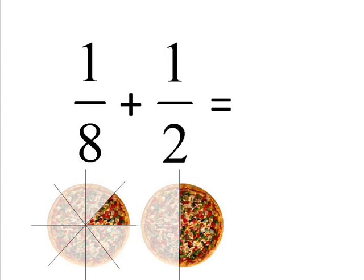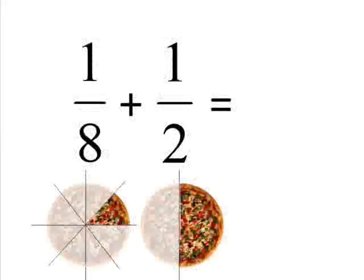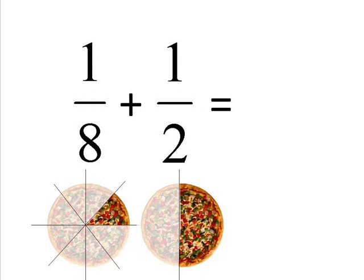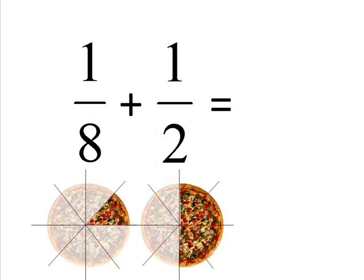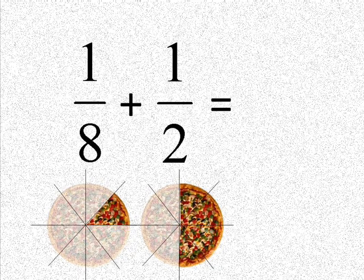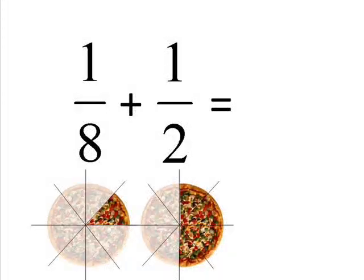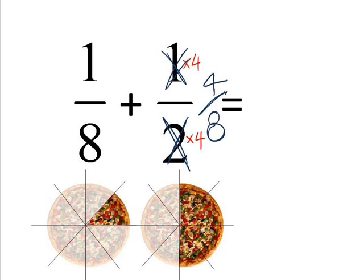Next we'll look at where you have a different bottom number. The example here is where you've got 1 eighth plus a half. Now what you need to do here is make the two bottom numbers the same. Remembering the stuff that you did on equivalent fractions earlier, the way that we can do this is by changing the half to a number over 8. To do this we multiply the top and the bottom number on the half by 4, which makes it into 4 eighths.